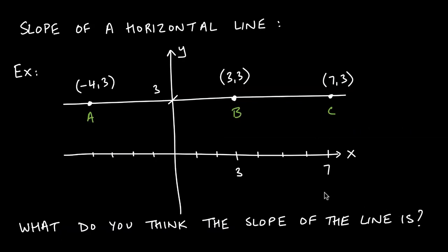I mentioned that as a prelude to the next couple of questions. To find the slope of a horizontal line, here's an example: a line passes through point A (−4, 3), B (3, 3), and C (7, 3). What do you think the slope of this line is? You can use the slope formula to find it, or make a conjecture and see if it works out.